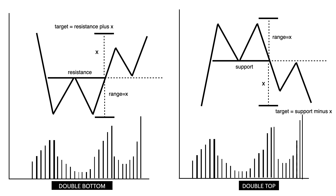In a double bottom pattern, the existing trend is a downtrend. It is made up of two consecutive troughs that are roughly equal with a moderate trough in between. The trend changes from bearish to bullish. Volume accelerates during the ascent from the second trough to show strong positive sentiment. The breakout above the resistance must show an increase in volume. When a breakout happens, the resistance becomes support.